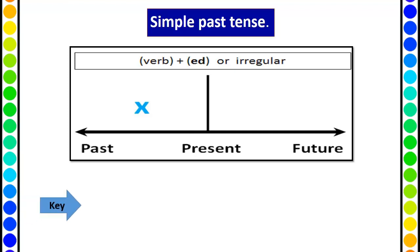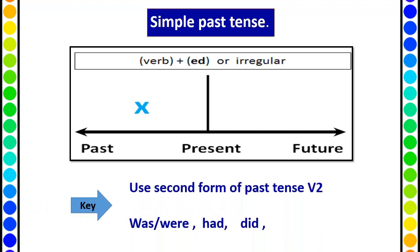So what are the key words? The key is either we use the second form of the verb, or we have a helping verb: was, were, had — and the question is asked with 'did'. Remember, if you find was, were, had, did — these are the helping verbs.